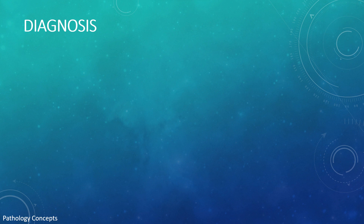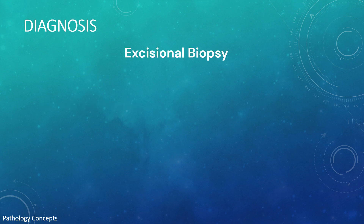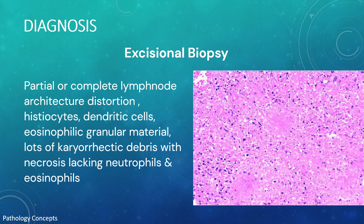There is no specific blood test to diagnose KFD, though specific tests such as ANA may be used to exclude other diseases like SLE. The gold standard for diagnosis is excisional biopsy of an enlarged lymph node. It is a patchy but well-defined diagnosis on biopsy, with findings including partial or complete lymph node architecture distortion.